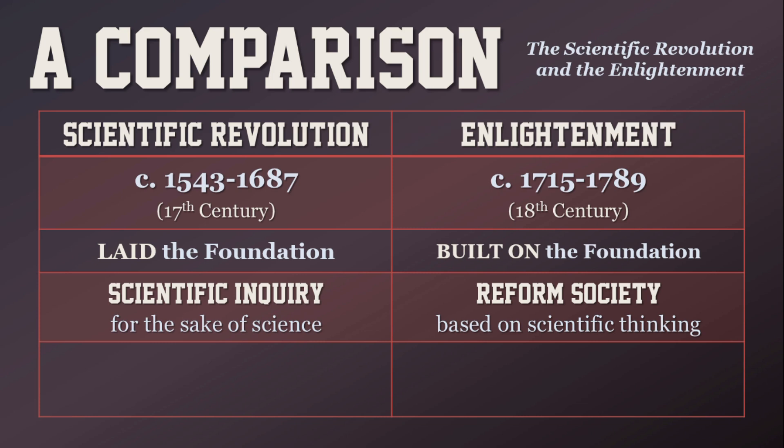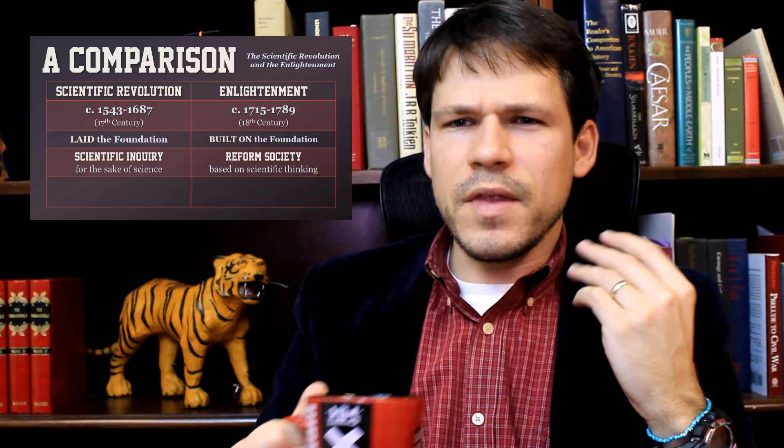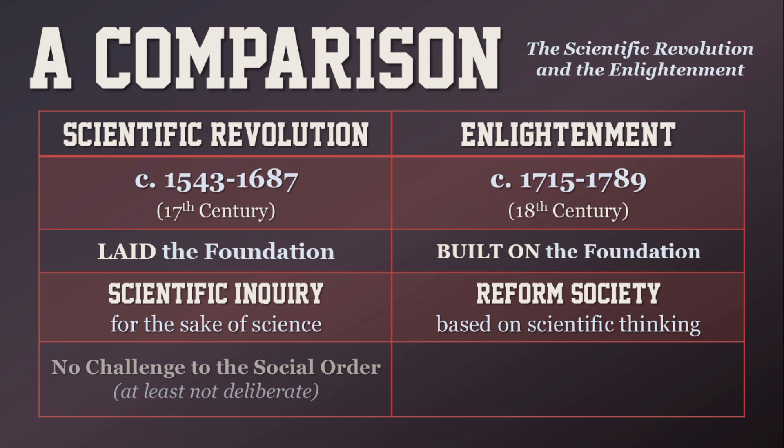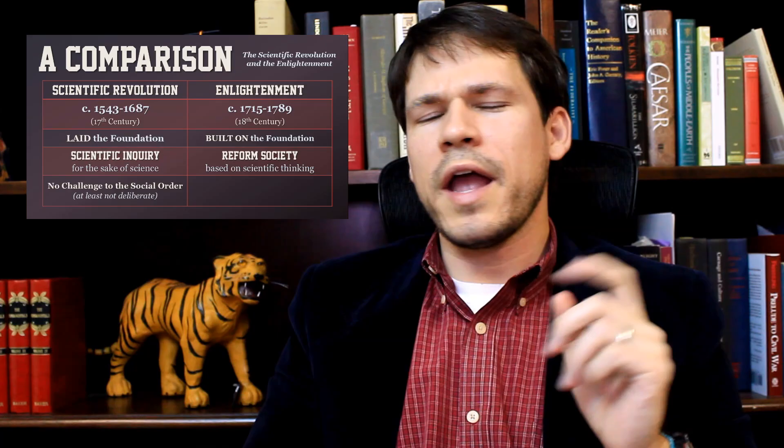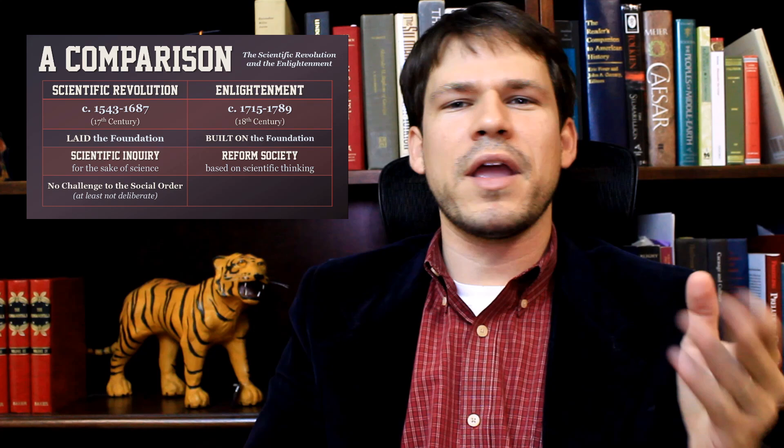That's the type of thing that went on during the scientific revolution — playing around with science just to learn stuff. Whereas the Enlightenment is much more focused on society: it's about applying scientific principles to reforming and improving society, something that wasn't necessarily a goal of the scientific revolution.